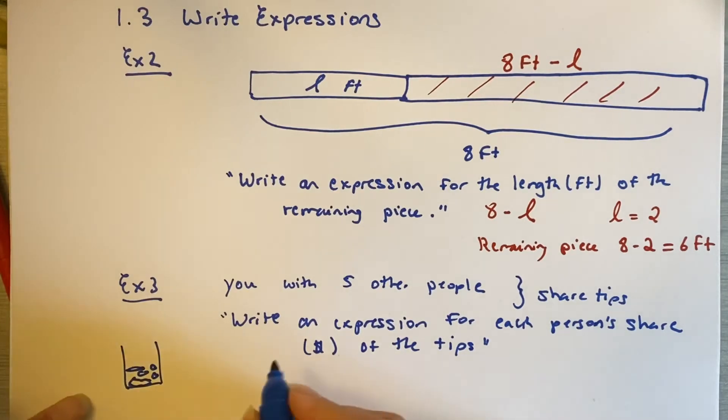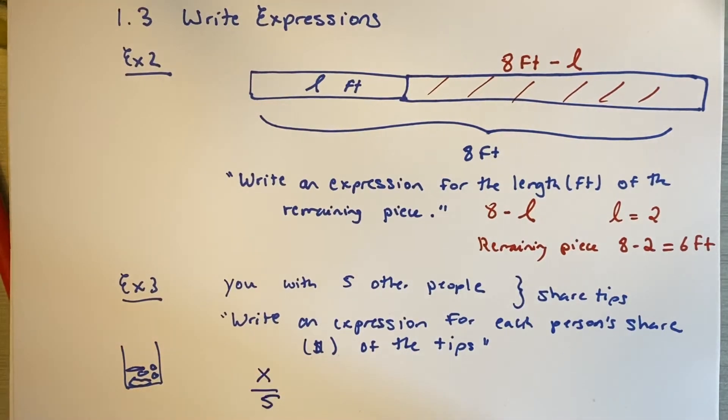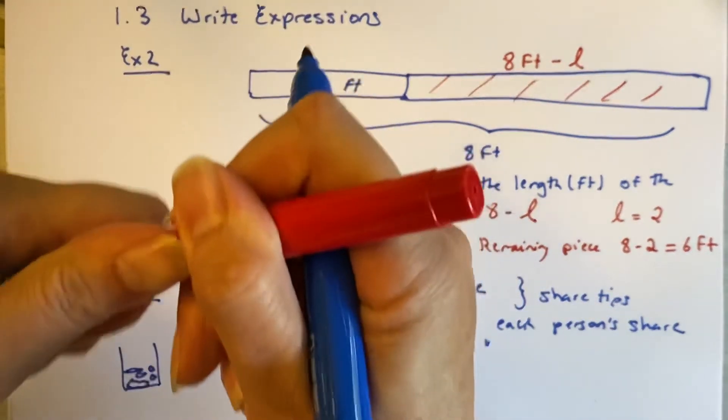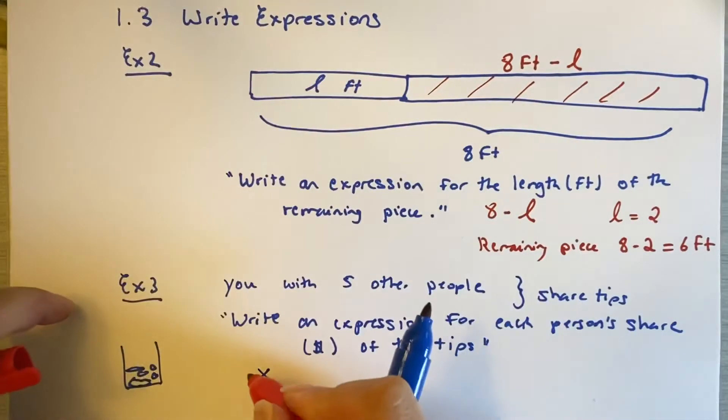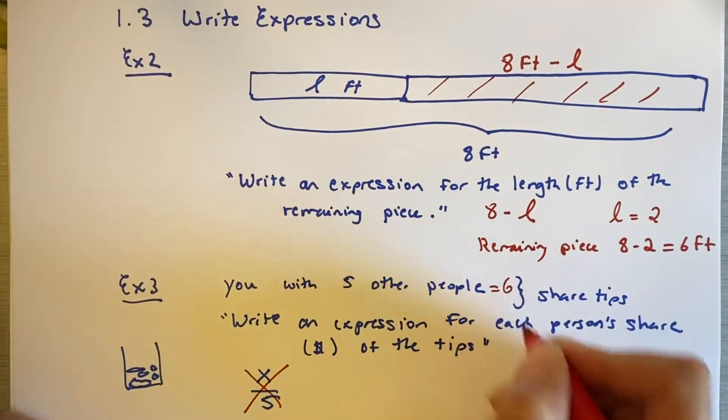If you wrote down X over 5, you will be like most of my students. And I probably would have done the same at your age. But that is not true. So if you wrote this down, look again. You work with five other people at an ice cream stand. That means how many people are there?